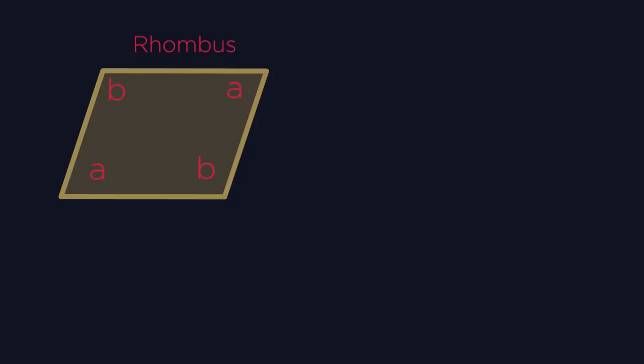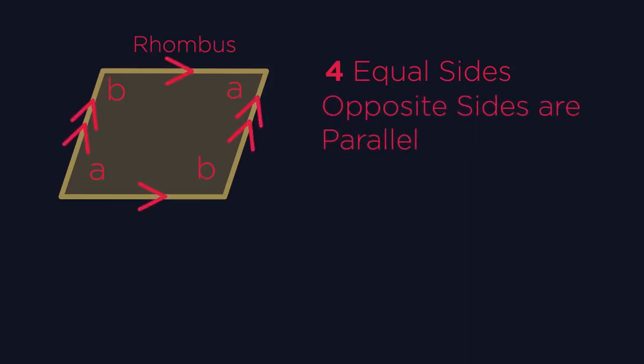What about a rhombus? What do you notice about its sides and angles? Pause the video and have a think. Four equal sides. Opposite sides are parallel and equal in length. Opposite angles are equal. I always think of a rhombus as a tipped over square. Did you know that a square is a type of rhombus?